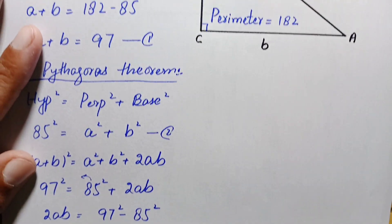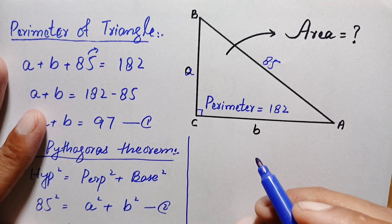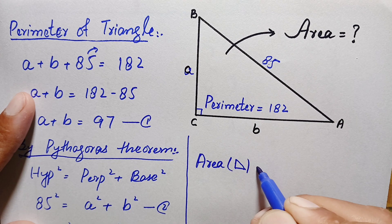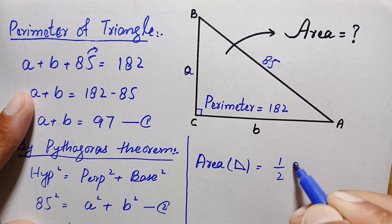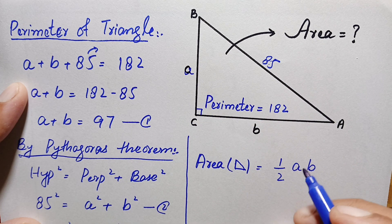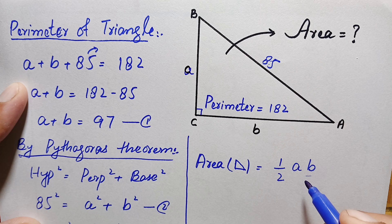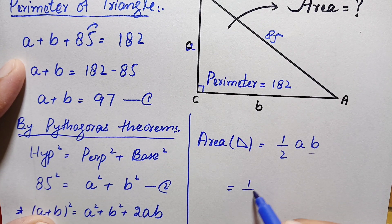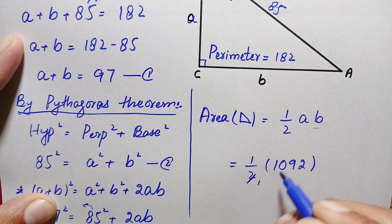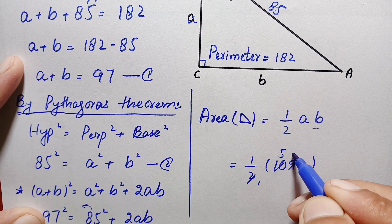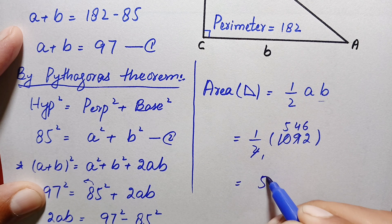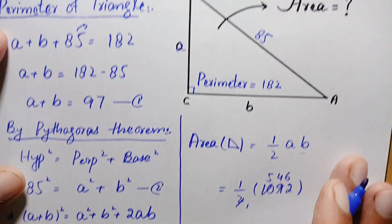Now we use the value of ab to find the area of the right angle triangle. The area of any right angle triangle is half times base times height. Here base is 'b' and height (perpendicular) is 'a', so area = ½ × ab = ½ × 1092. Simplifying: 1092 ÷ 2 = 546. Therefore the area is 546 square units.